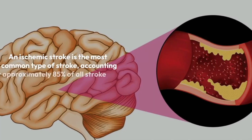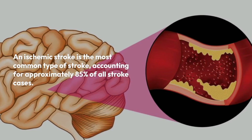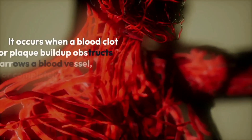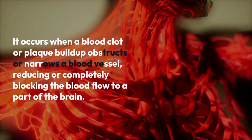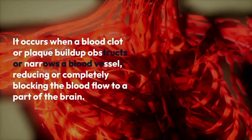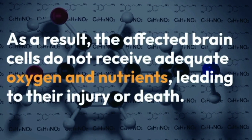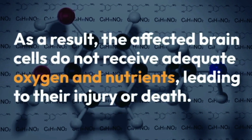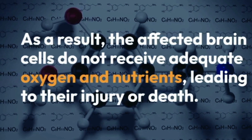An ischemic stroke is the most common type of stroke, accounting for approximately 85% of all stroke cases. It occurs when a blood clot or plaque buildup obstructs or narrows a blood vessel, reducing or completely blocking the blood flow to a part of the brain. As a result, the affected brain cells do not receive adequate oxygen and nutrients, leading to their injury or death.